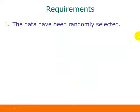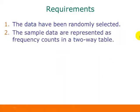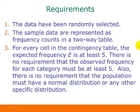The requirements to do this type of test are that the data have been randomly selected, the sample data are represented as frequency counts in a two-way table or a contingency table, and for every cell in the contingency table, the expected frequency E is at least 5. There is no requirement that the observed frequency must be at least 5, and there's no requirement that the population must have a normal distribution or any other specific distribution.